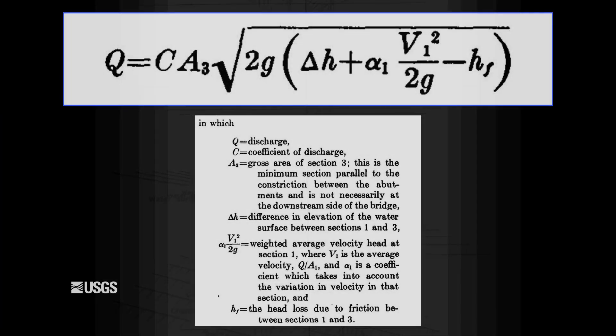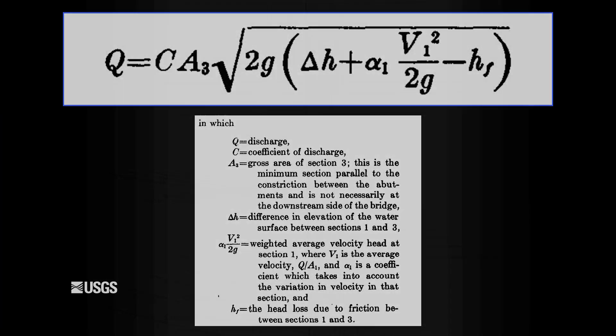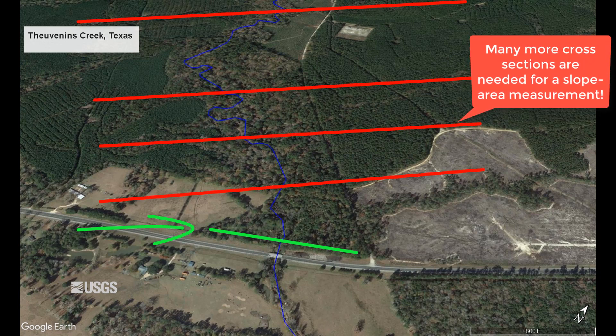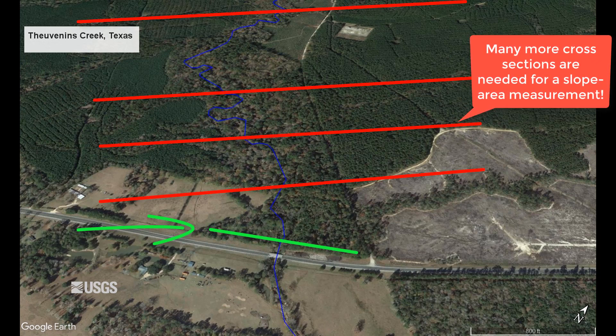You might ask, why choose this method when I can just do a slope area? Well, this indirect method only requires one cross section upstream of the constriction. When you have a wide or heavily wooded floodplain, it may be much easier or more efficient to only survey one cross section upstream, rather than four to five labor-intensive cross sections throughout a reach.